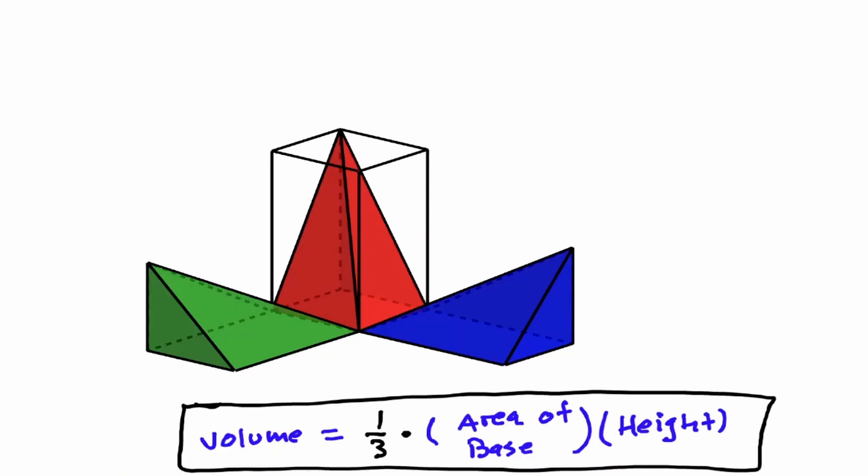So now we have developed a formula that we can use to find the volume of any pyramid. It is going to be one third of the volume of a prism — one third of the area of the base times the height.